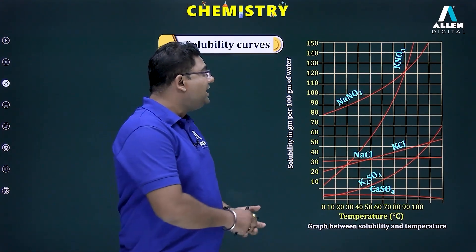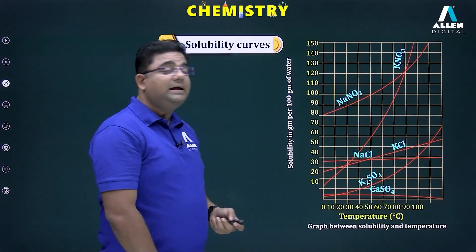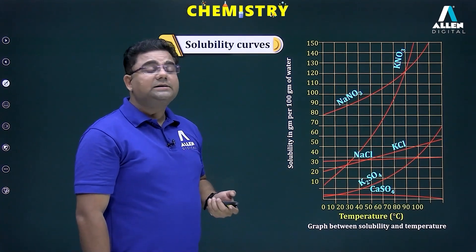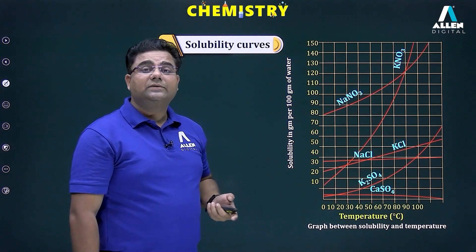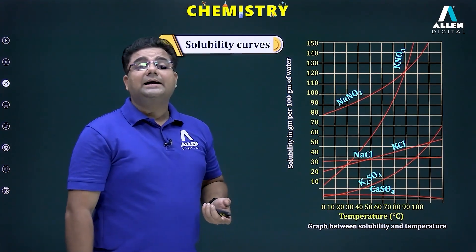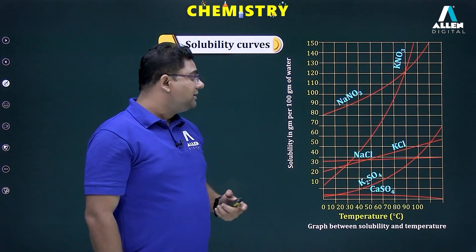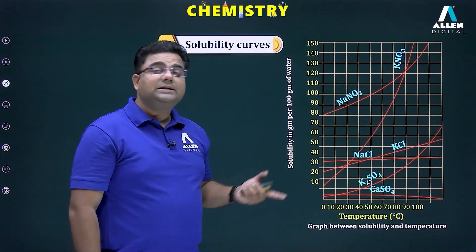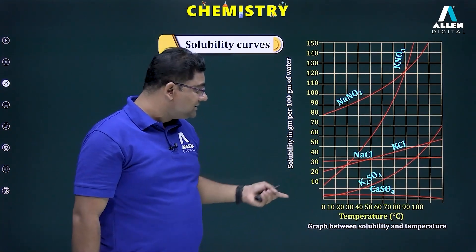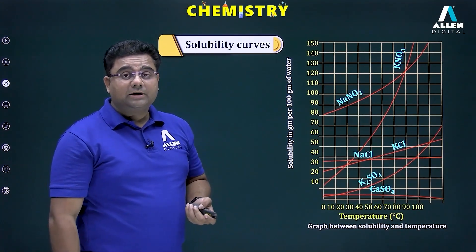The curve includes different salts: NaNO3 (sodium nitrate), KNO3 (potassium nitrate), KCl (potassium chloride), and NaCl (sodium chloride). The solubility of all these salts continuously increases as we increase the temperature.